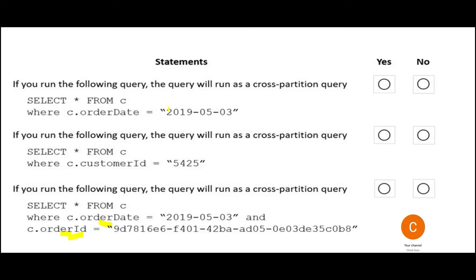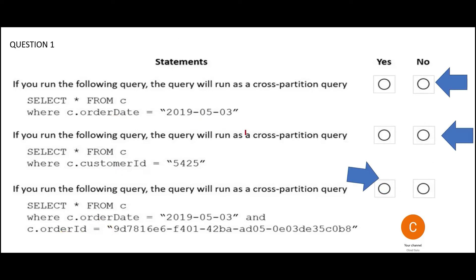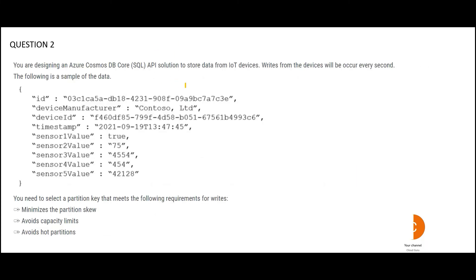For the first query, only order date is referenced — that is not the partition key, so this will not be a cross-partition query. The answer is no. The second query references customer ID, which is also not a partition key, so that will also not be a cross-partition query. The answer is no as well. Those are the final answers for question one.